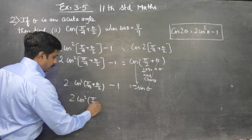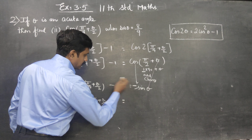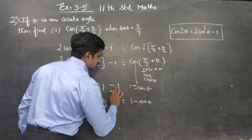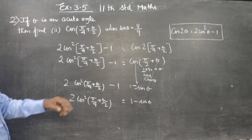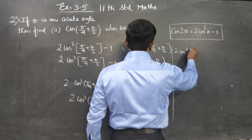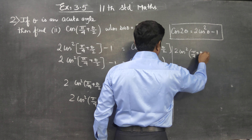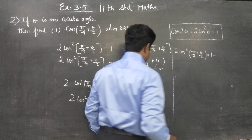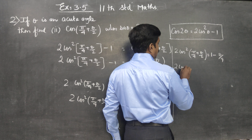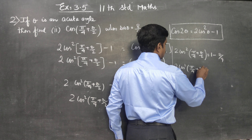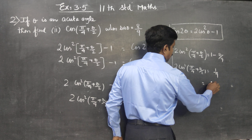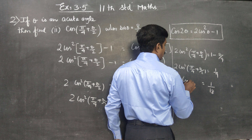Simplifying: 2 times (pi by 4) plus theta by 2 gives pi by 2 plus theta. Since this is an odd multiple of 90 degrees, cos changes to negative sin theta. The angle falls in the second quadrant, so the sign becomes negative: 2 cos square (pi by 4 plus theta by 2) minus 1 equals negative sin theta.